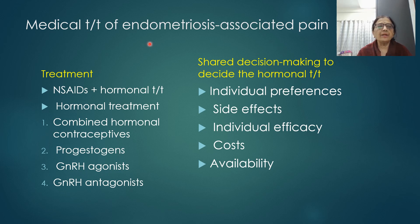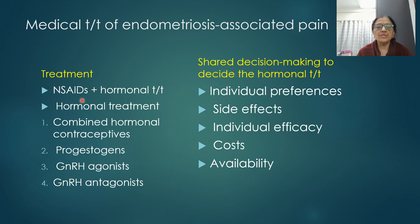For medical treatment of endometriosis-associated pain, NSAIDs are used as first-line treatment, usually along with hormonal therapy, as NSAIDs alone are not sufficient for complete pain relief given how severe the pain can be. If there is only partial relief with NSAIDs, hormonal treatment needs to be added.